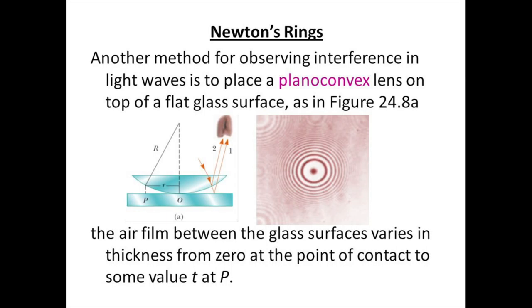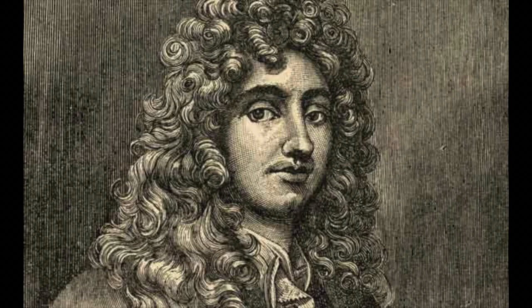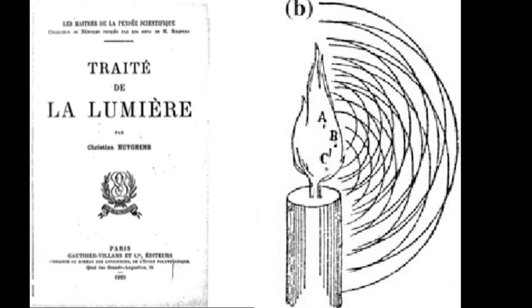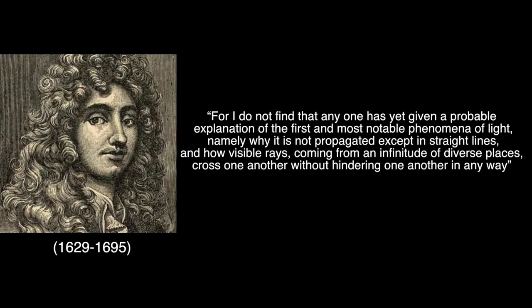In order to explain light interference, Newton associated it with the idea that light was a wave — an idea that Newton did not like. This idea was presented to the world in 1678 by Christiaan Huygens, written in his 1690 book 'Treatise on Light.' Huygens states within the thesis: 'For I do not find that anyone has yet given a probable explanation of the first and most notable phenomena of light, namely, why it is not propagated except in straight lines, and how visible rays, coming from an infinitude of diverse places, cross one another without hindering one another in any way.'